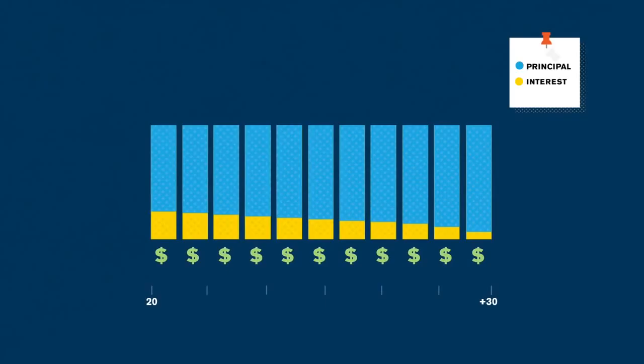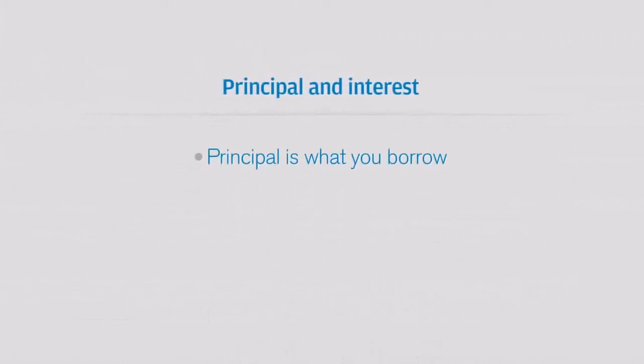And what happens then — because your payment is staying the same — while the interest portion decreases, the principal payment, the money that's actually going to pay down the loan, will increase month over month.